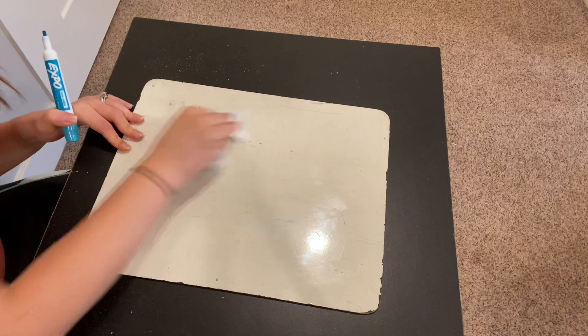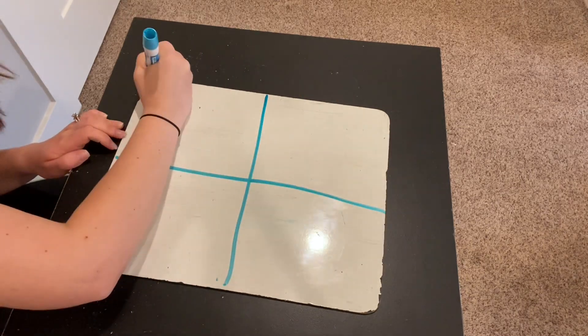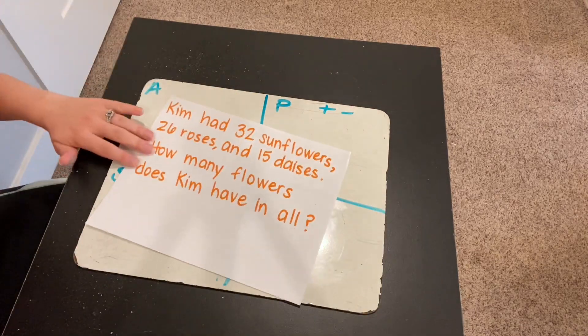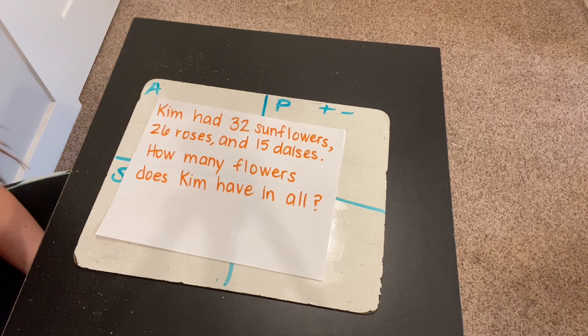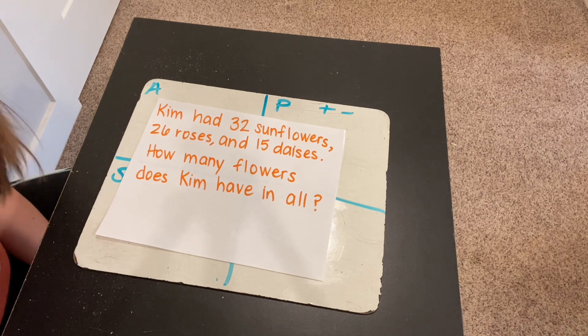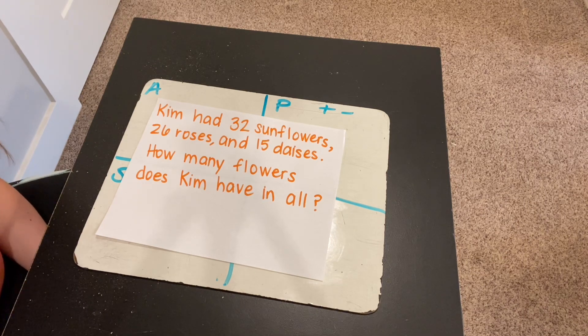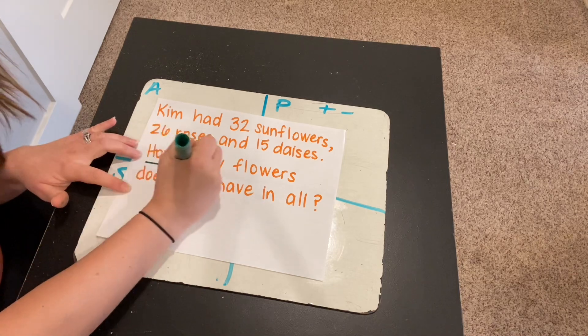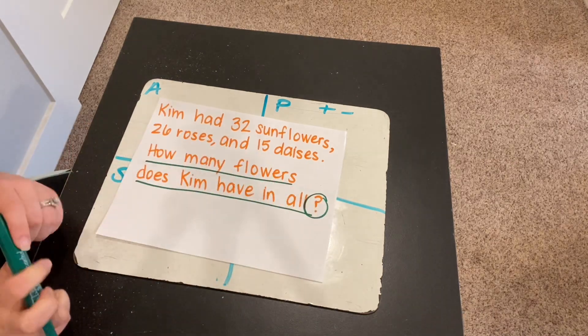All right, let's move on to our word problem of the day. And we are going to use the apps check strategy when we do this problem. Okay, here's our word problem. Kim had 32 sunflowers, 26 roses, and 15 daisies. How many flowers does Kim have in all? All right, let's read it again and listen for the question this time. Kim had 32 sunflowers, 26 roses, and 15 daisies. How many flowers does Kim have in all? What is the question that we're being asked here? How many flowers does Kim have in all? There's the question that we're being asked.